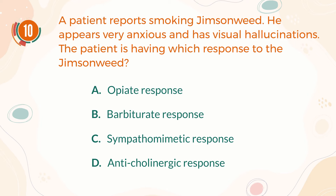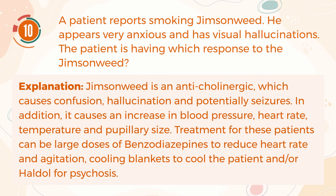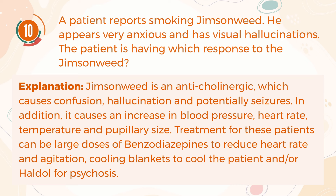The correct answer is D, anti-cholinergic response. Jimson weed is an anti-cholinergic, which causes confusion, hallucination, and potentially seizures. In addition, it causes an increase in blood pressure, heart rate, temperature, and pupillary size. Treatment for these patients can include large doses of benzodiazepines to reduce heart rate and agitation, cooling blankets to cool the patient, or Haldol for psychosis.